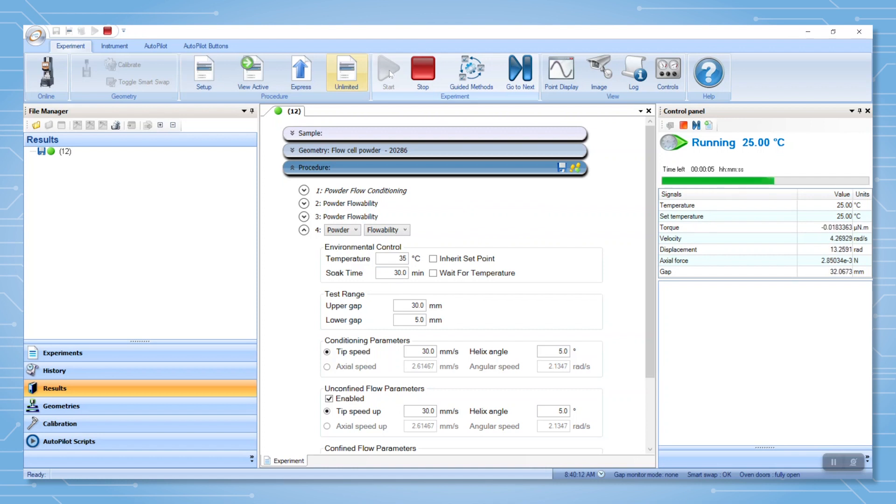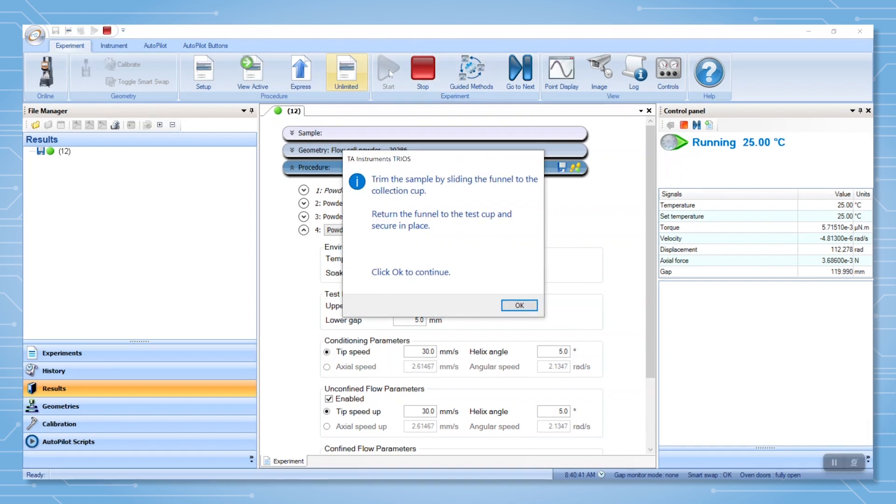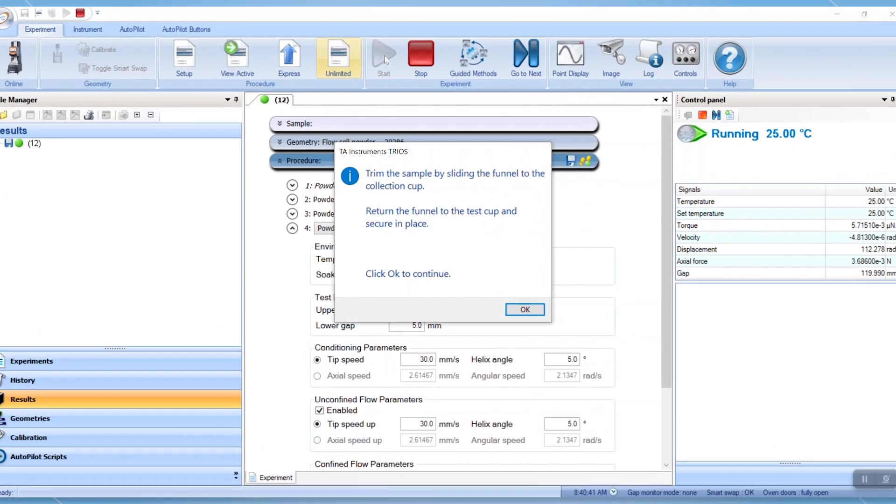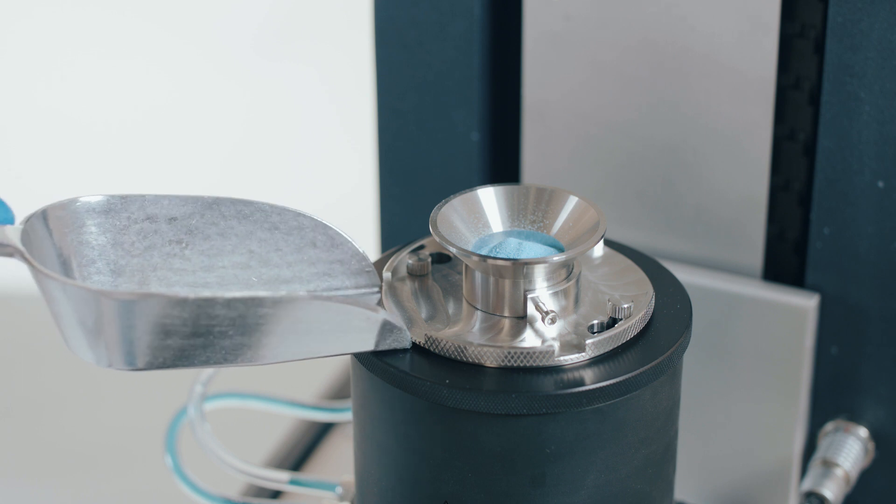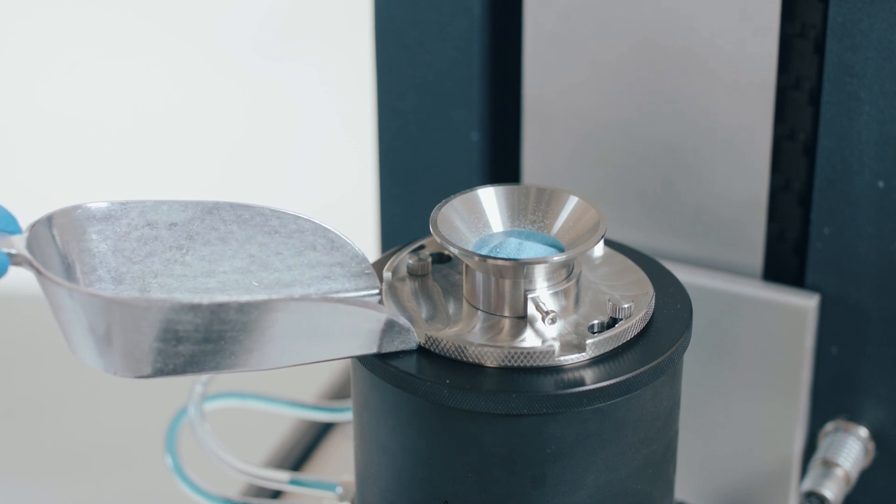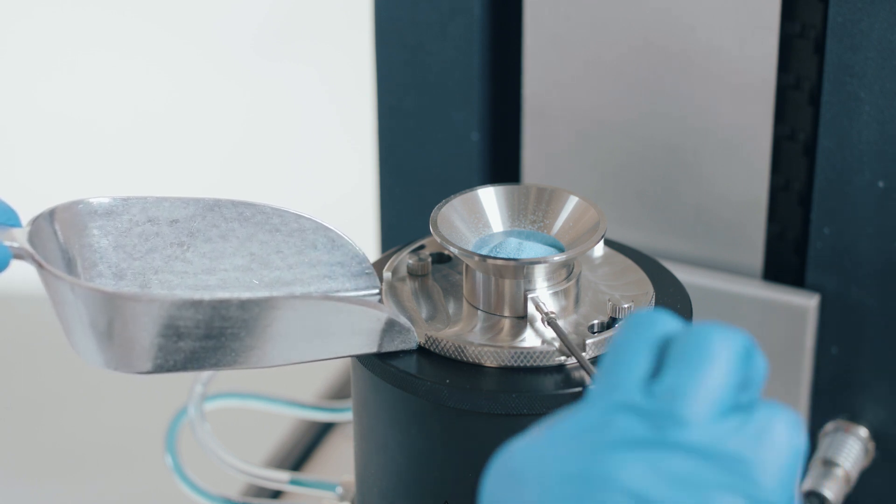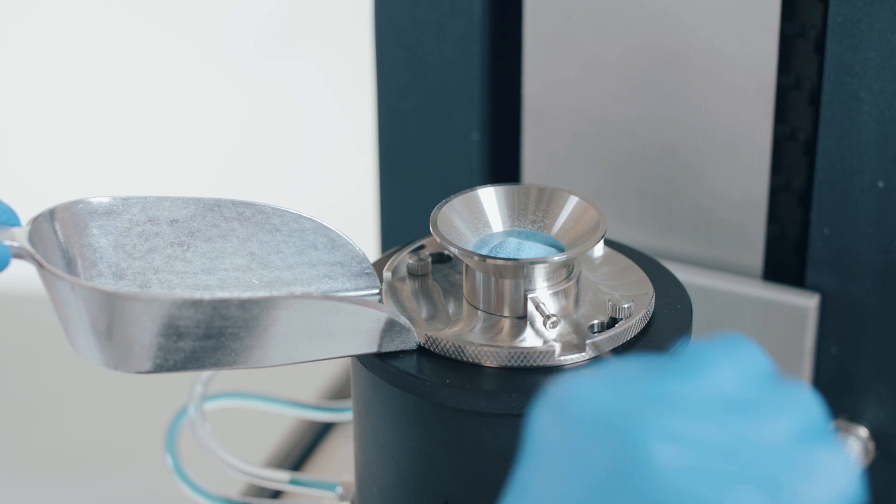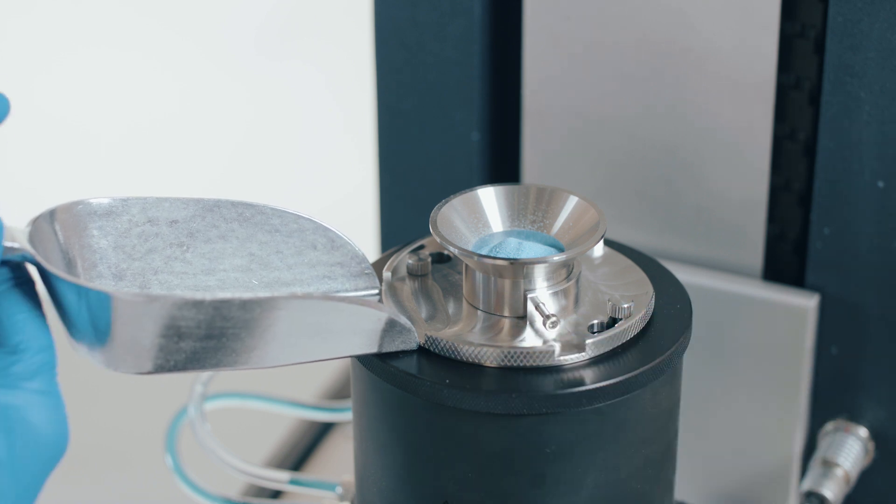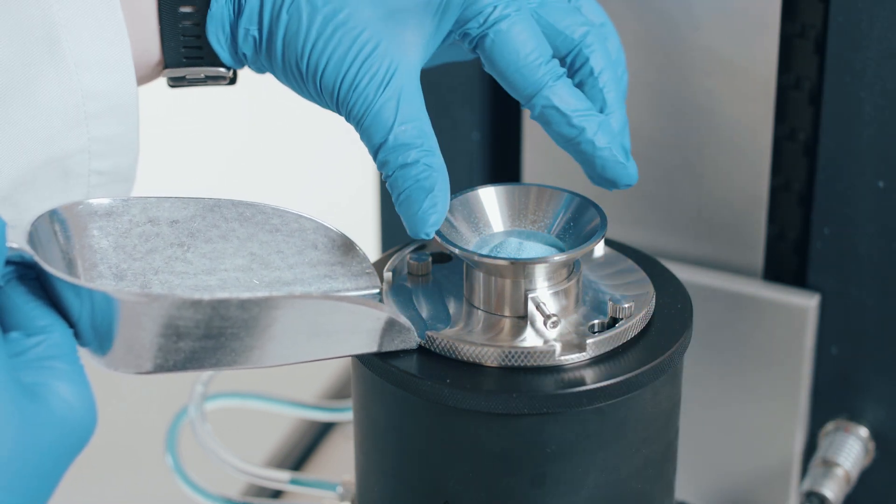After the conditioning step is complete, follow the prompt on the rheometer screen or in the TRIOS software and trim the sample. Place the trimming scoop into the notch on the cup, loosen the screw, and slide the funnel across to remove excess powder.